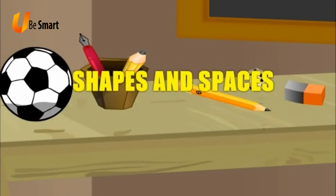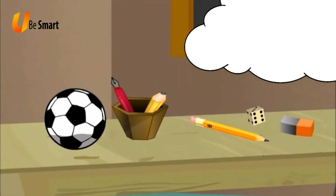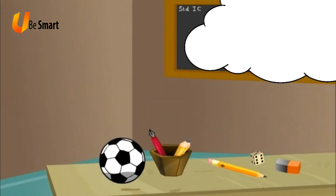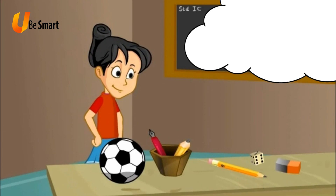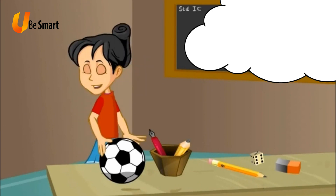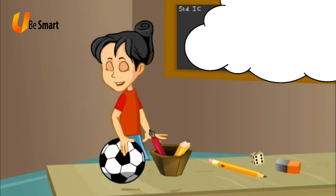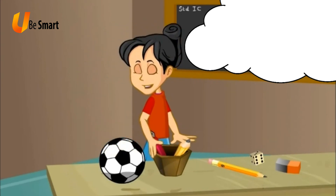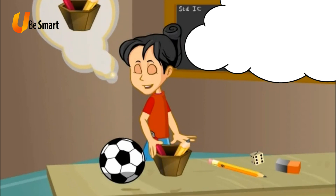Shapes and Spaces. Here we can see a classroom. In the classroom, a football, pencil, pencil box, eraser and dice are kept on the table. Rani is a brilliant student in the classroom. She closed her eyes and tried to identify the shapes of each object by touching it. 'I can feel the shapes of these objects,' Rani told. Now let us study about the shapes of these objects.